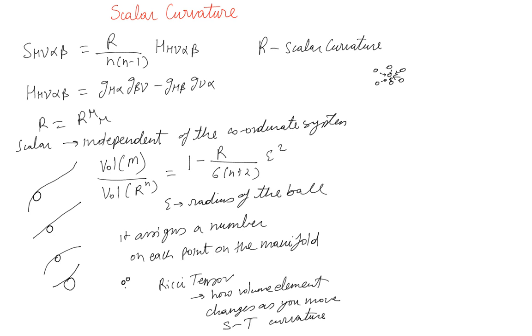So in a way you can say, in a hand-waving way, that scalar curvature... Now if this is flat space, then we know that all this volume will be the same. So scalar curvature is sort of an average of Ricci tensor in terms of this volume.